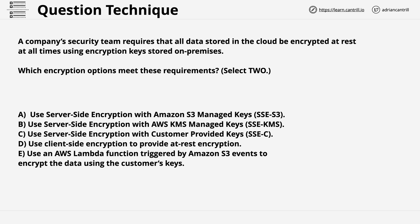The real step one is to identify what matters in the question text. The question is actually pretty simple — it gives you two requirements. The first is that all data in the cloud needs to be encrypted at rest, and the second is that any encryption keys are stored on-premises. For any answers to be correct, they need to meet both of these requirements. So let's follow a similar process on the answer text — first looking for any word fluff, and then looking for keywords which can help identify either the correct answers or more answers that we can exclude. The first three answers all state server-side encryption, but the remaining two answers don't. So the first thing I'm going to try to do is analyse whether server-side encryption means anything — does it exclude the answers, or does it point to those answers being correct?